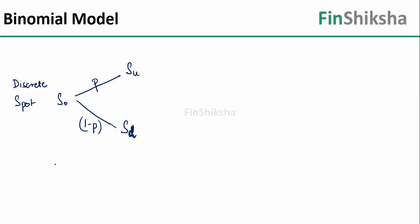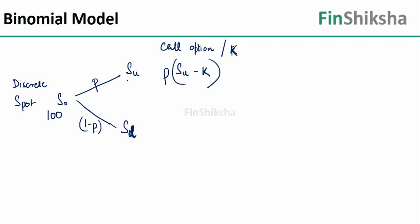So either you have probability p which takes it to Su, or probability 1 minus p which takes you to Sd. Now if you have a European call option with strike k, assuming k is between Su and Sd, the payoff at the upper node would be Su minus k with probability p. For example, if the stock is at 100 today, Su is 120, Sd is 80, and the strike is 110, then at the upper level the payoff for the call would be Su minus k.